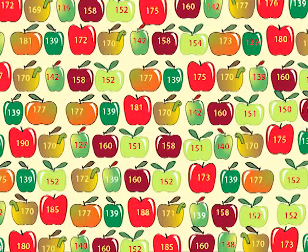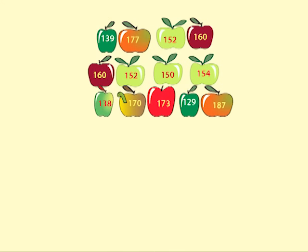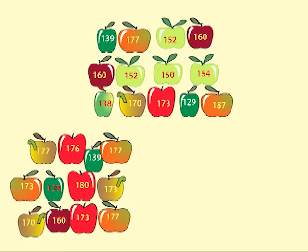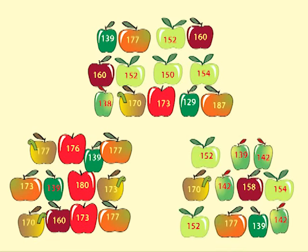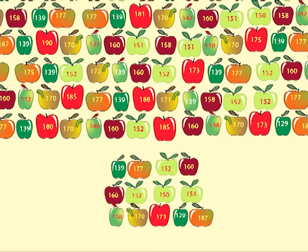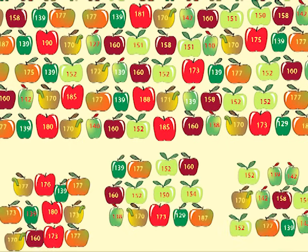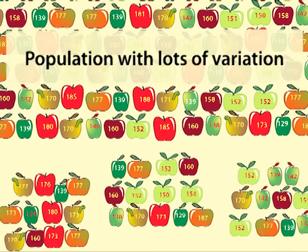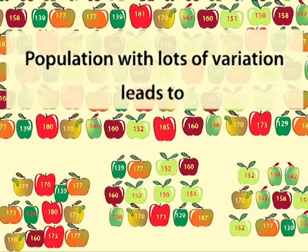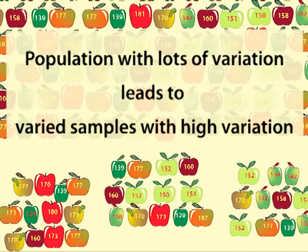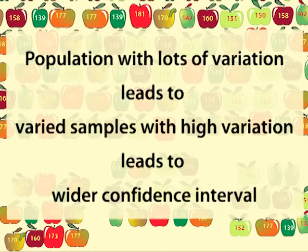But a more varied population will lead to a more varied sample. Different samples taken of the same population will differ more. We would be less sure that the sample mean was close to the population mean. Our confidence interval would be larger. So, greater variation in the population leads to a wider confidence interval.